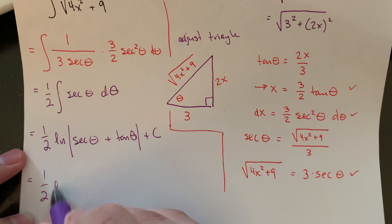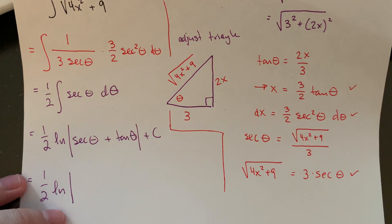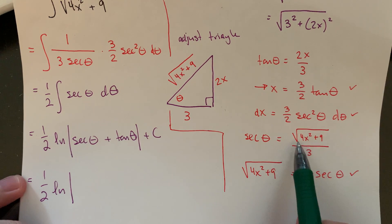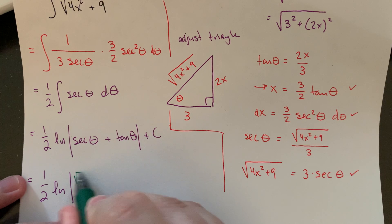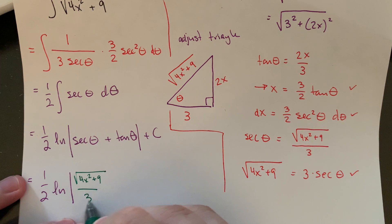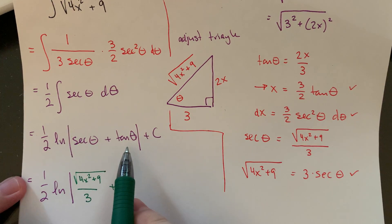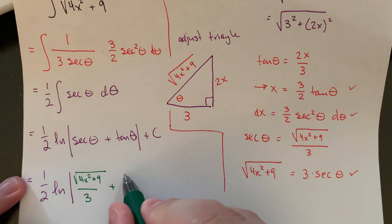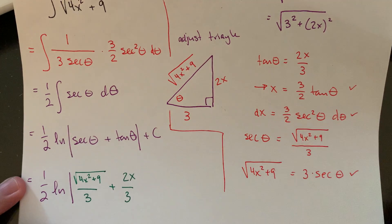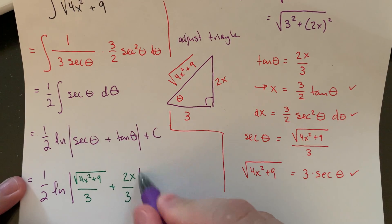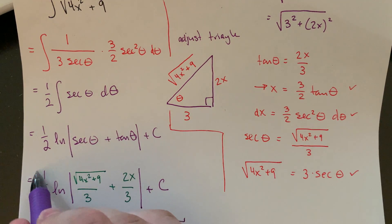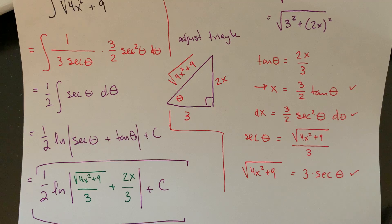And so then from there, all I need to do is subbing for my secant and subbing for my tangent. So what are those going to be? 1 half natural log. We should be able to pull these out pretty fast. We actually have both of them over here. Secant theta is our root over 3. So I'll just actually pull those from the side. So square root of 4x squared plus 9 all over 3. And then this is plus tangent, which was opposite over adjacent. So then that's going to be 2x over 3. Close off our absolute value and plus big C. And that's going to be our final.